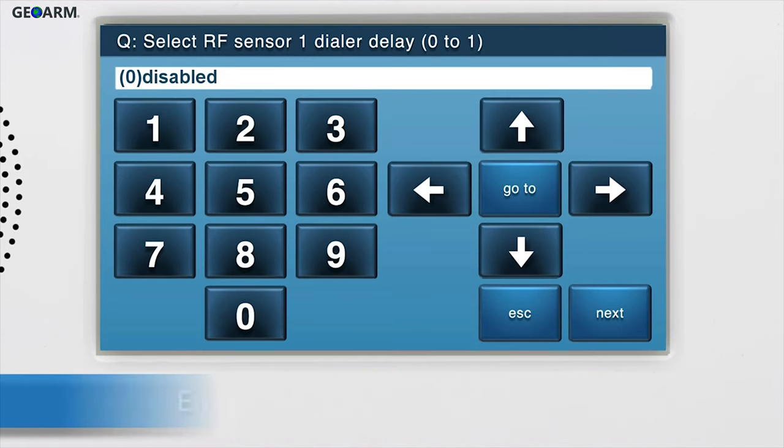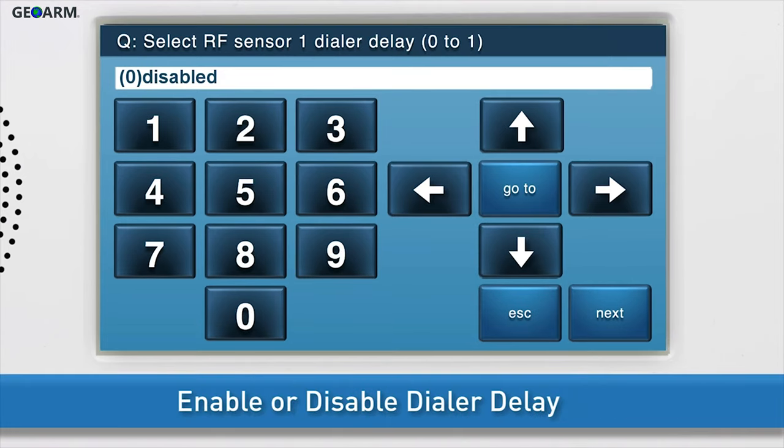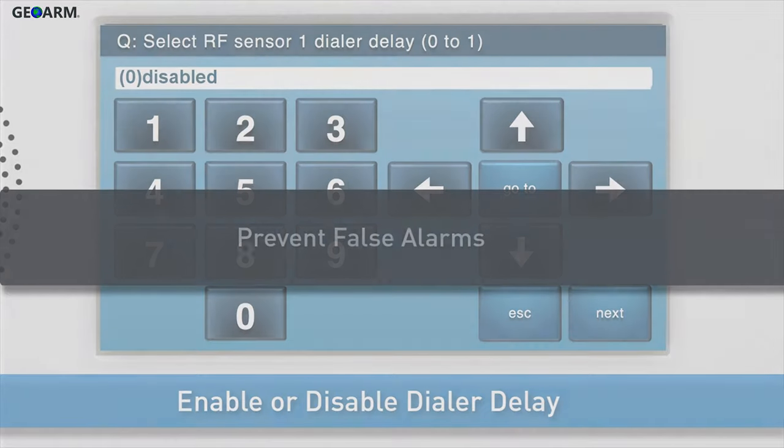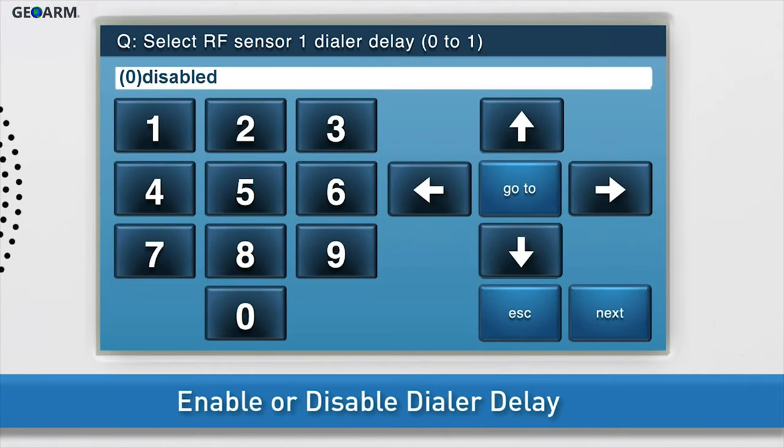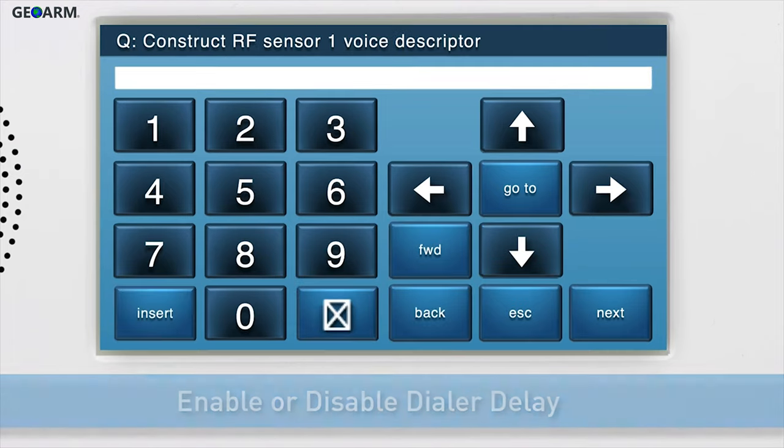Choose whether to enable or disable the dialer delay. The dialer delay is used to prevent false alarms. To enable the dialer delay, use the right arrow to select option 1. To disable the dialer delay, leave option 0 disabled. Press the down arrow to go to the next sub-question.